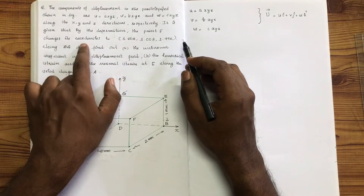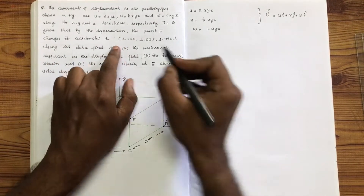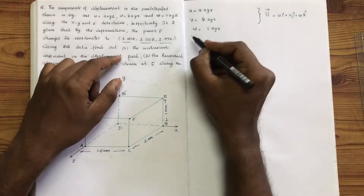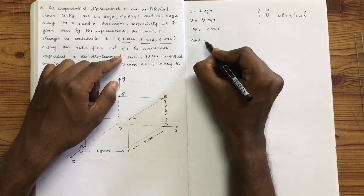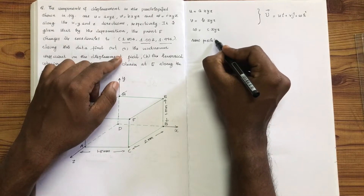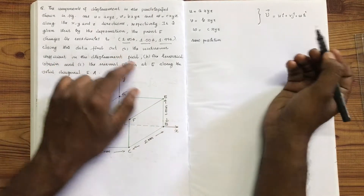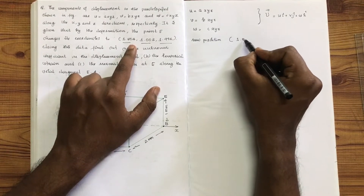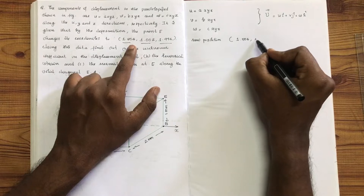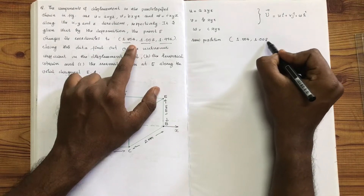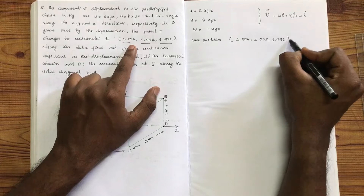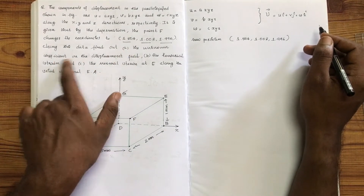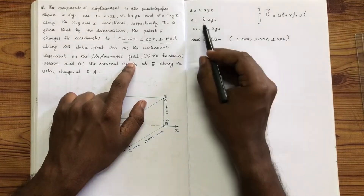It is given that by the deformation, the point F changes to its new coordinates. The new position coordinates are: x = 1.504, y = 1.504, and z = 2.504. Using this data, find the unknown coefficients A, B, and C.